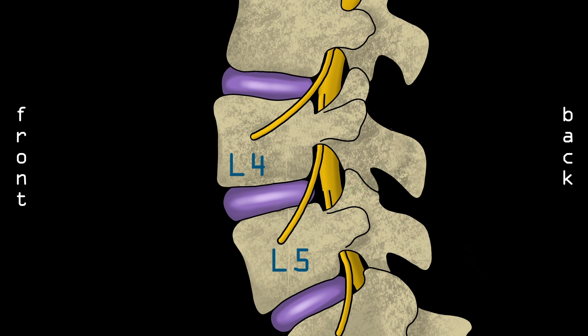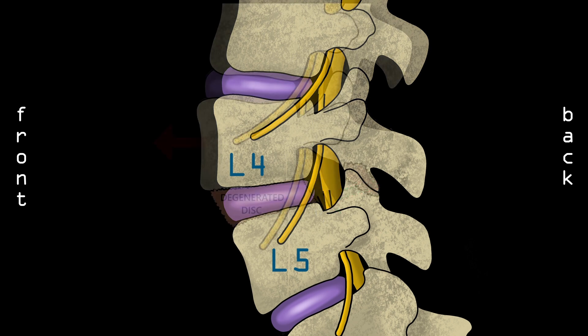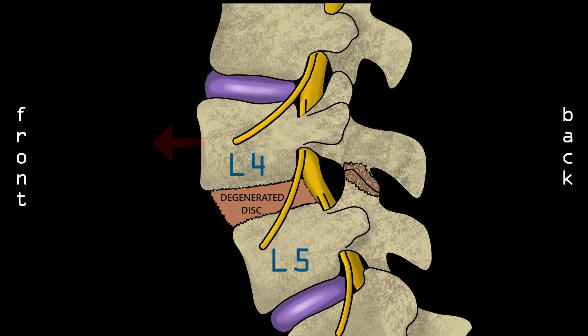On the other hand, here is what a spondylolisthesis looks like. The L4 vertebrae has slipped over the L5 vertebrae. When I draw a line at the back of the L4 vertebrae, it does not match up with another line drawn at the back of the L5 vertebrae. This slippage is called spondylolisthesis.